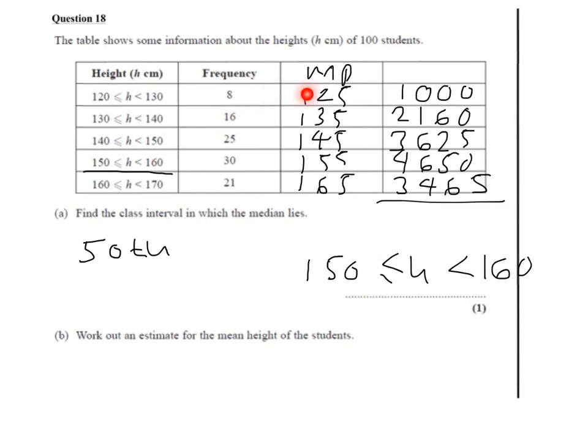So I've done 8 times 125, 16 times 135, and so on. This is the estimate of the total height of the 8 people who are between 120 and 130, and so on. We need to add this column up to give us a total of 14,900. That's the estimate of the total height of the 100 students.